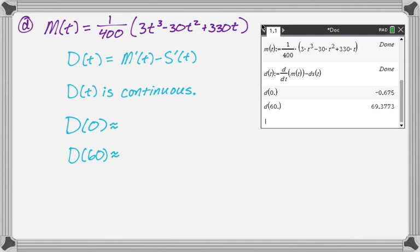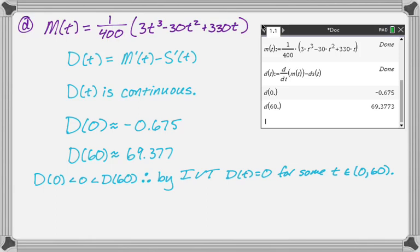Calculator. I defined M, I defined D of T, and then I plugged in. So we get negative, and this is good because I have opposite signs. Negative and positive. So I'm going to say D of 0 is less than 0, which is less than D of 60. And I'm going to say therefore, by the intermediate value theorem, D of T equals 0 for some T between 0 and 60. And now is where the magic happens.